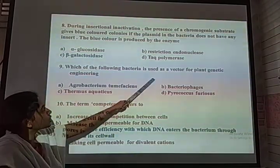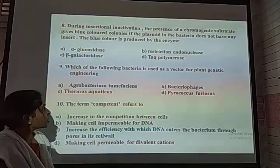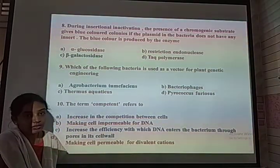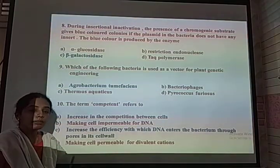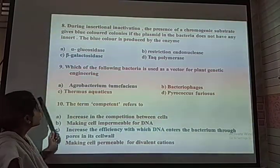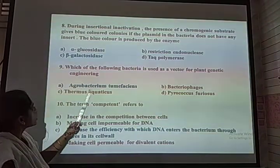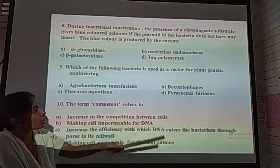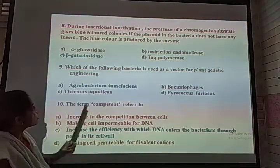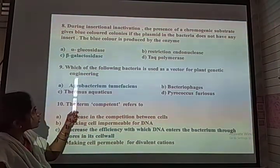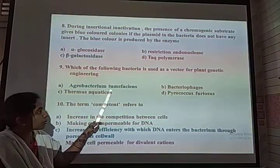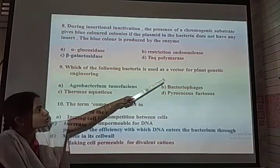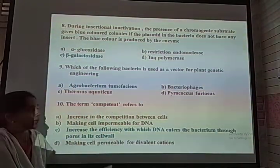Which of the following bacteria is used as a vector for plant genetic engineering? In plants, the Ti plasmid is used as a vector. It has been extracted from a microbe called Agrobacterium tumefaciens. The correct option for plant genetic engineering is Agrobacterium tumefaciens, helpful for the extraction of a Ti plasmid that is used as a vector to transfer desired genes in plants.